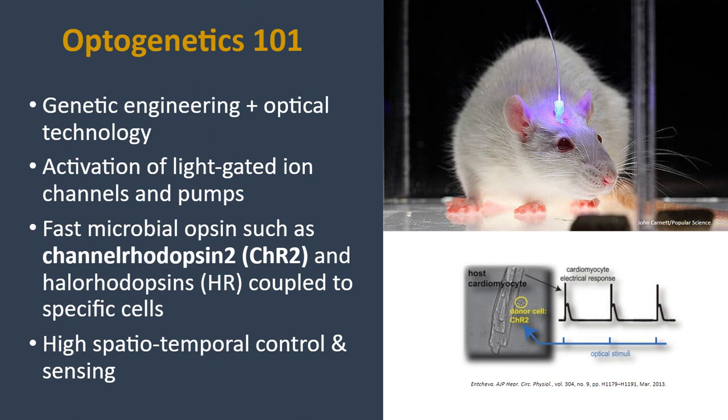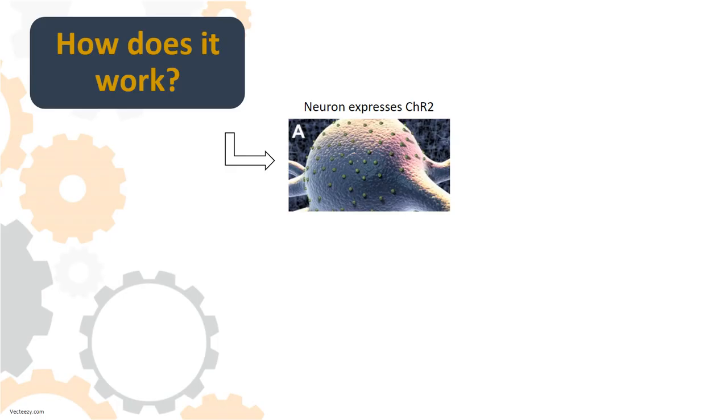In optogenetics 101: just like the name says, it's a combination of genetic engineering and optical technology. You can activate light-gated ion channels and pumps attached to specific cells, tissue, or neurons without stimulating other unnecessary cells. We use proteins called opsins — the most common ones in this field are channelrhodopsins and halorhodopsins. This provides very high spatial and temporal control, and you can also have sensing actuators that monitor rather than excite or inhibit cell performance.